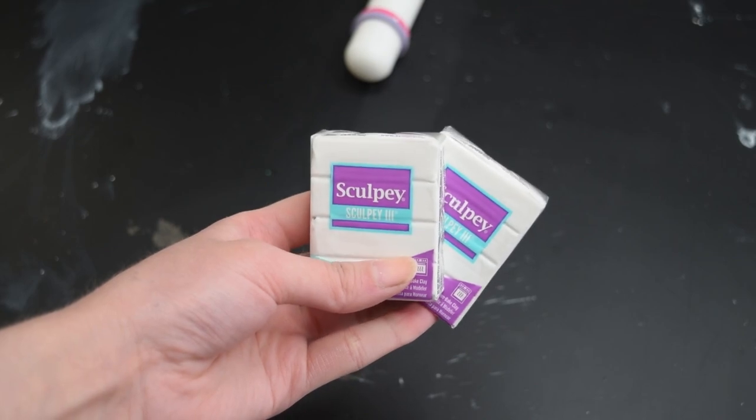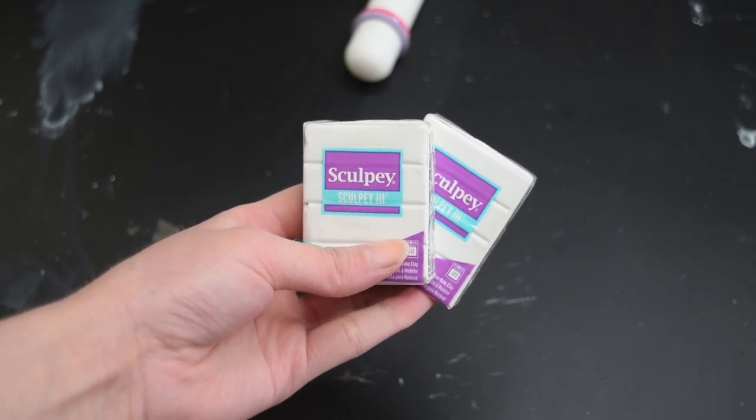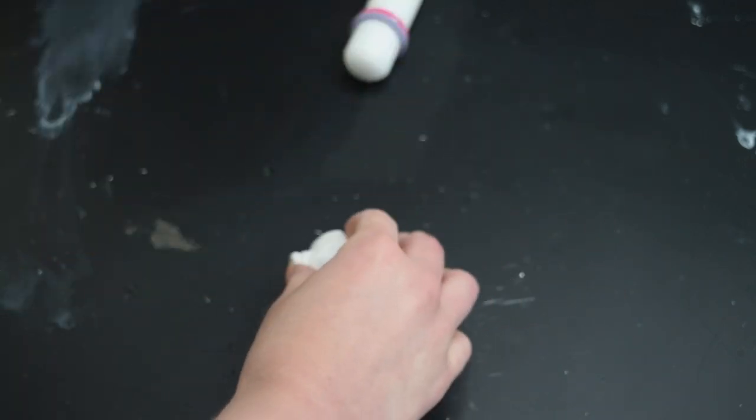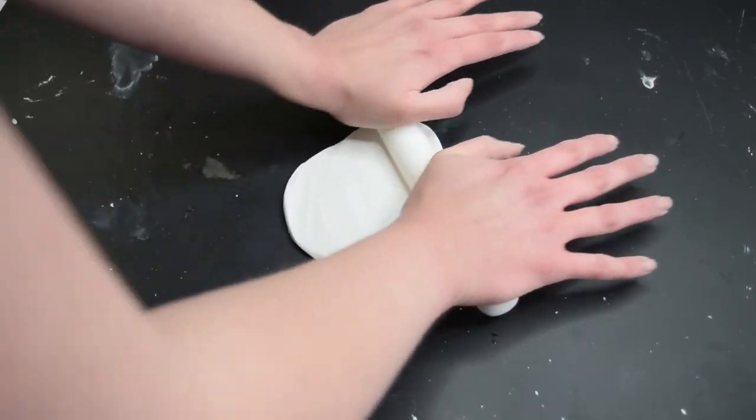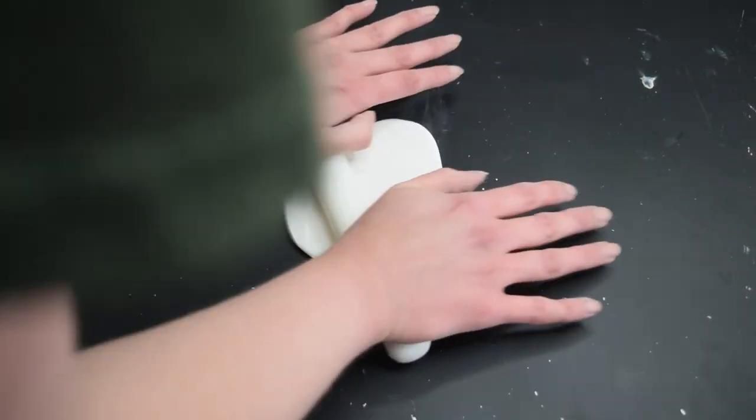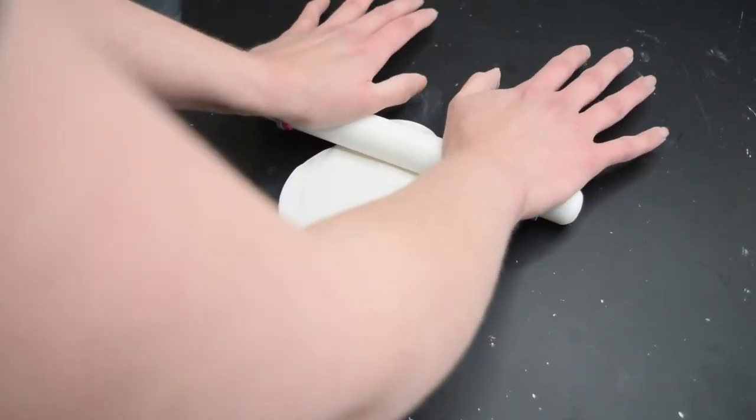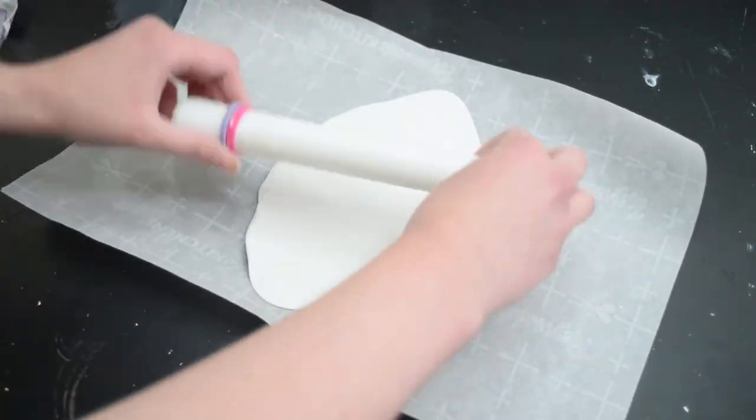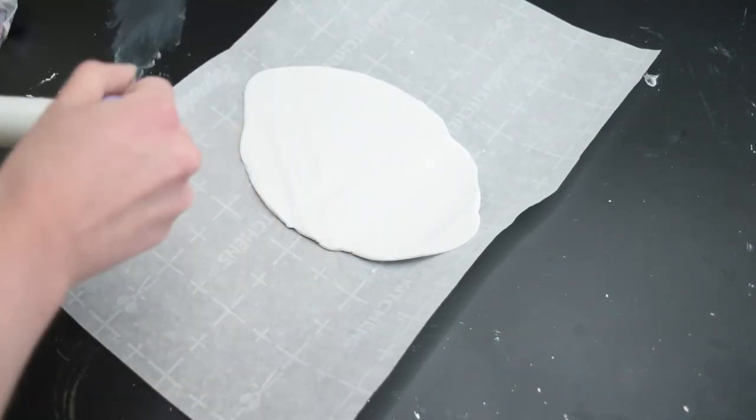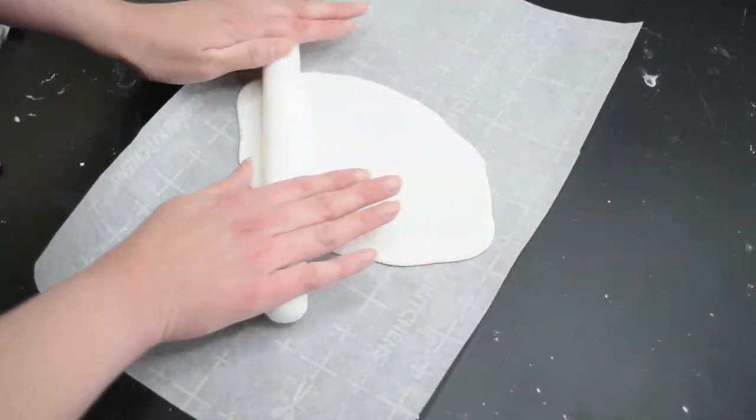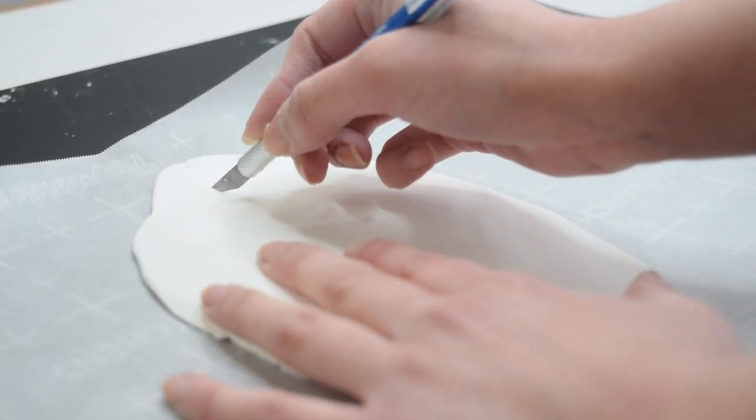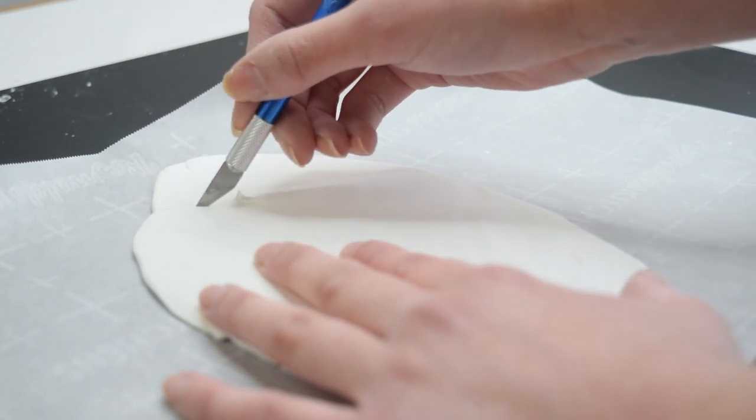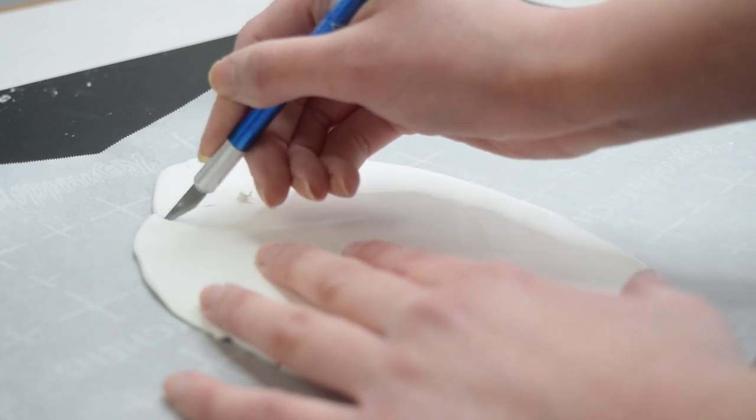To recreate this leaf I thought the easiest way to do it would be with some polymer clay. So I picked up a couple packs from the craft store and I kneaded them together until they were nice and warmed up and then took this rolling pin which is actually a fondant rolling pin because it was cheaper than the polymer clay rolling pins. Once I was satisfied with the size of my piece here I then went in with an exacto knife and just began free handing the shape of the different leaf pieces.